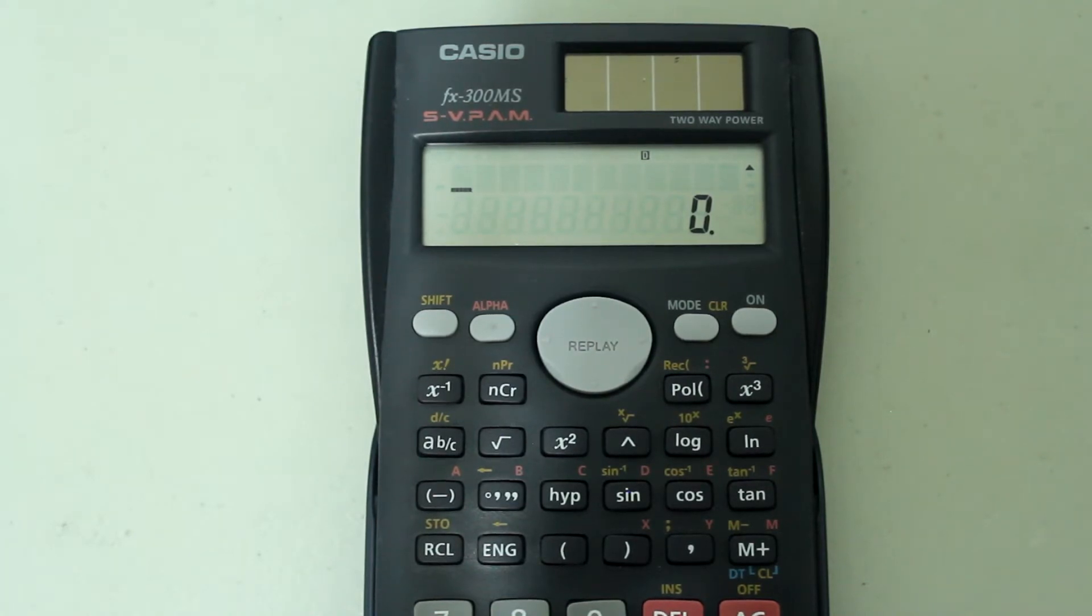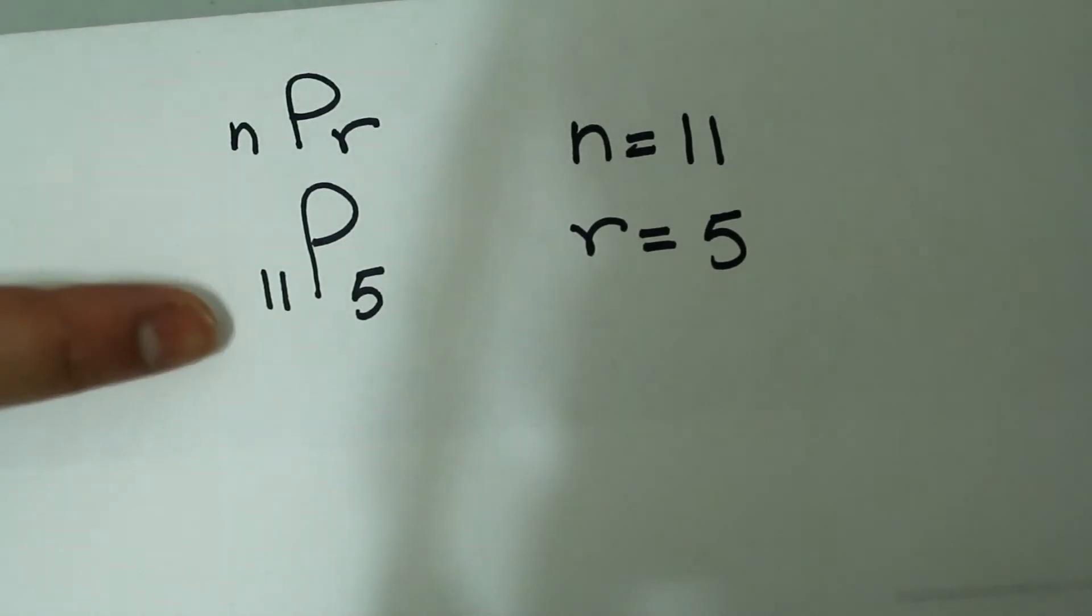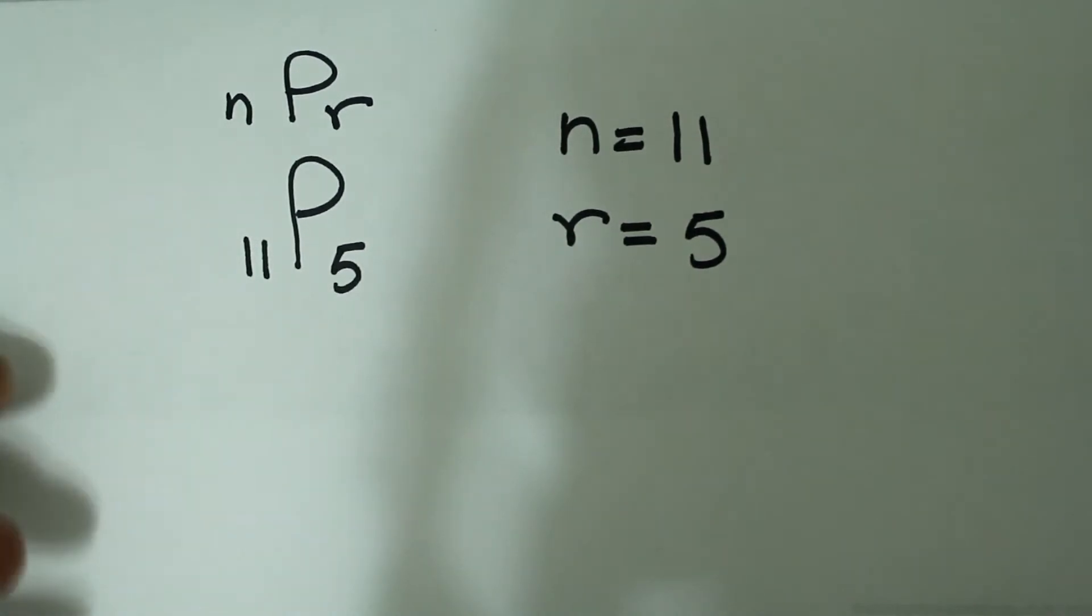As you know, a permutation is a selection of objects where the arrangement or order matters. For example, if you want to figure out the possible number of arrangements of 5 objects from a set of 11 objects, the permutation would be written in this form, where the n value is 11 and the r value is 5. So this is what the permutation would look like.